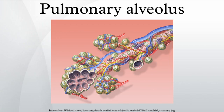These air sacs are the forming and termination point of the respiratory tract. They provide a total surface area of about 100 m². A typical pair of human lungs contains about 700 million alveoli, producing 70 m² of surface area.